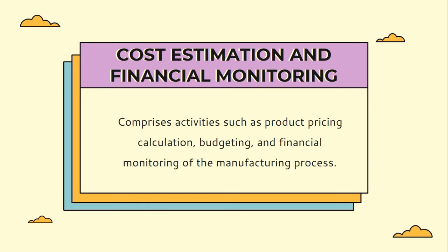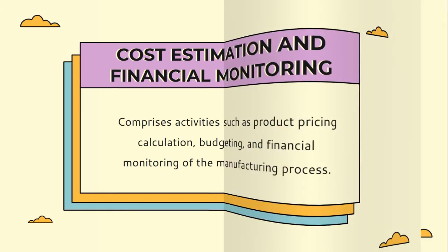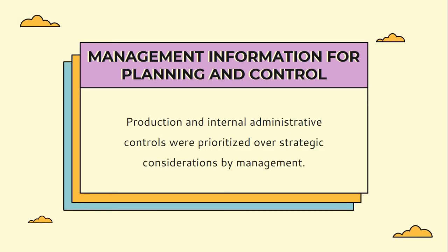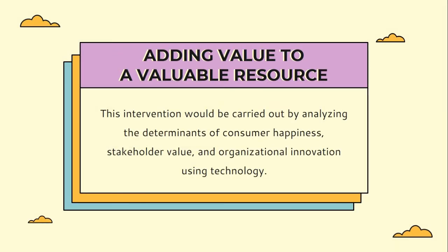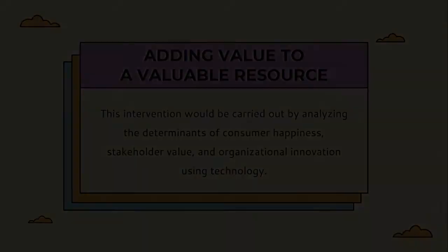These are the management accounting practices that our company applies, which include cost estimation and financial monitoring. This comprises activities such as product pricing, calculation, budgeting, and financial monitoring of the managing process. The next practice is management information for planning and control. Productions and internal administrative controls in our company are prioritized over strategic considerations by management. Adding value to available resources is carried out by analyzing the determinants of consumer happiness, stakeholder value, and organizational innovation by using technology.